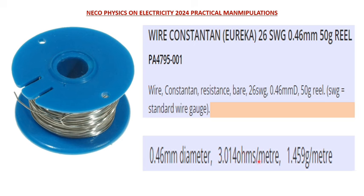Now that we've determined the resistance per unit length, I'm going to perform a very short and simple experiment to determine the approximate internal resistance of the battery I'm going to be using. Let's get that experiment started.